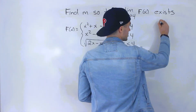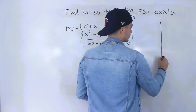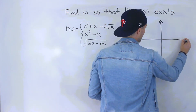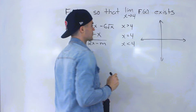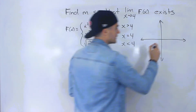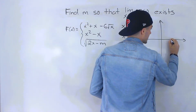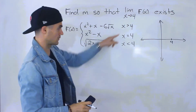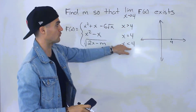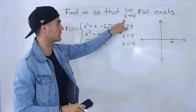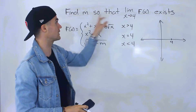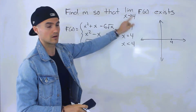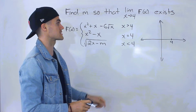I'm going to create a graph so we can show visually what's going on. The x value we're dealing with throughout the whole question is 4. We're finding the constant m so that the limit as x approaches 4 of f of x exists.